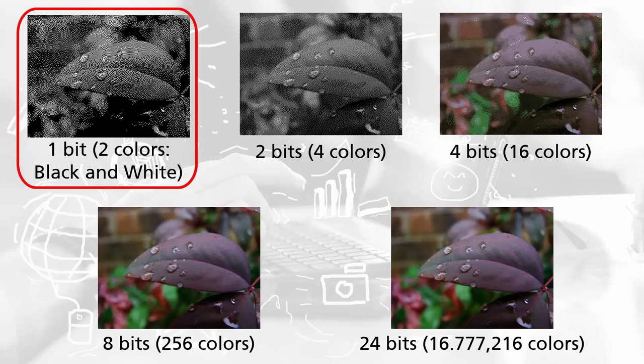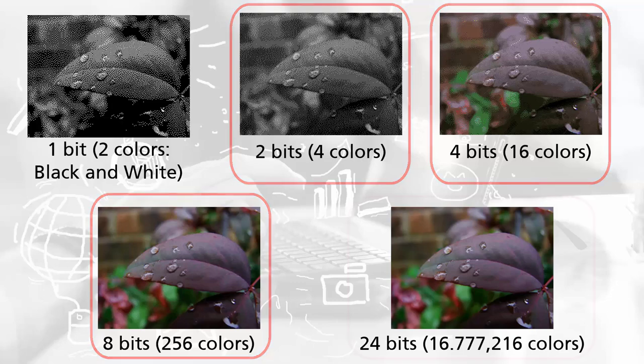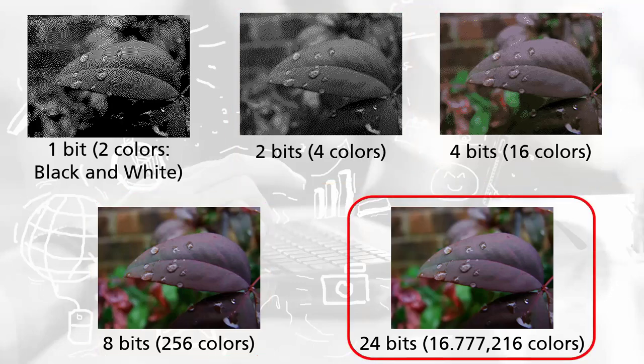A black and white image, or a 1-bit image, can only show two color tones: black and white. A grayscale image typically ranges from 2 to 8 bits and can store more color information than a 1-bit image. A color image, typically 24 bits or higher, can store millions of colors.